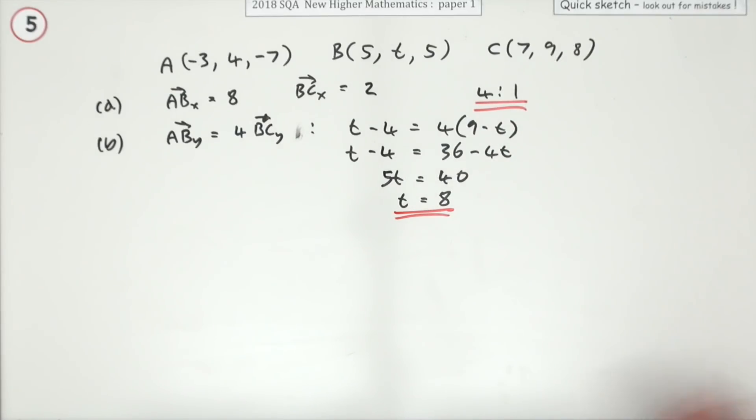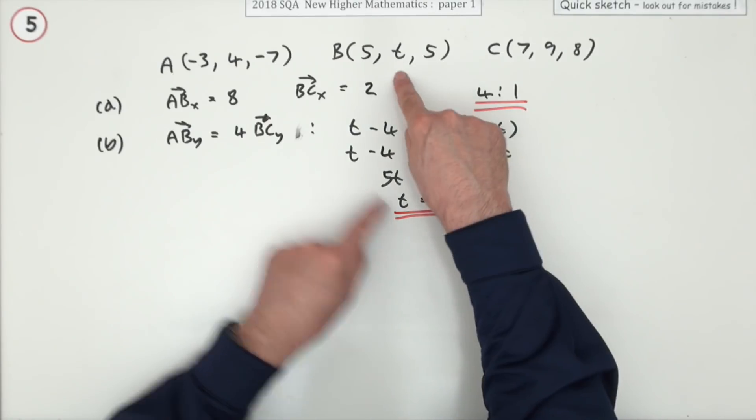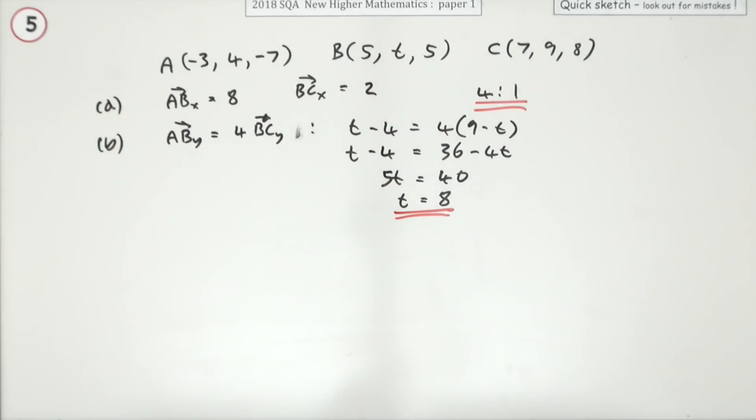Just a quick double-check: is that still in the ratio of four to one? Going from four to eight is four steps, going from eight to nine is one step. There we go.